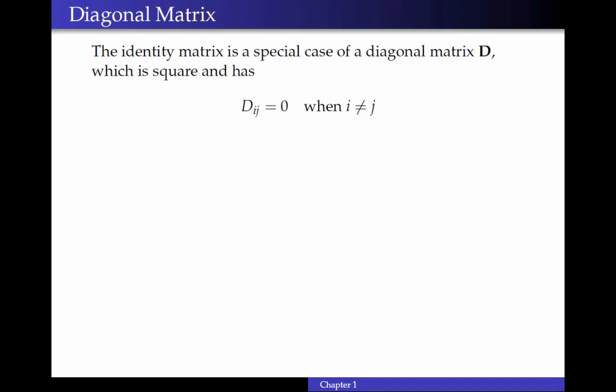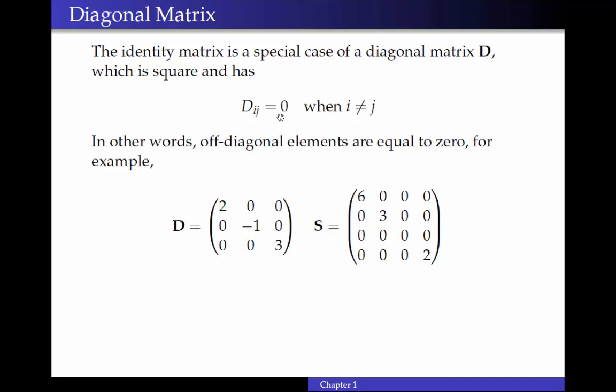The next special type of matrix we'll talk about is a diagonal matrix. And the identity matrix is a special case of a diagonal matrix, which is square and has dij equal to zero when i is not equal to j. So that means when the row number is not equal to the column number, the element is zero. In other words, the off-diagonal elements, those elements that are not on the main diagonal, will always be equal to zero. So here, d is a three-by-three diagonal matrix, and it has all non-zero numbers on the diagonal. And here, s is a four-by-four diagonal matrix, and it has a zero on the diagonal, but that's okay. The only thing we really need to be sure it's a diagonal matrix is that all of the off-diagonal elements are zero.